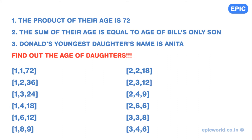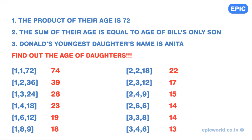After this, Donald tells Bill the sum of their ages is equal to Bill's only son's age. The possible values for this sum can be: 74, 39, 28, 23, 19, 18, 22, 17, 15, 14, 14, and 13. Since Bill knows the age of his only son, he could have easily guessed which set of numbers satisfies these two criteria.